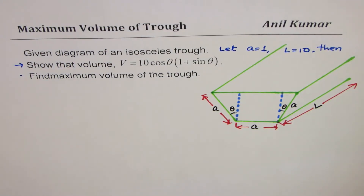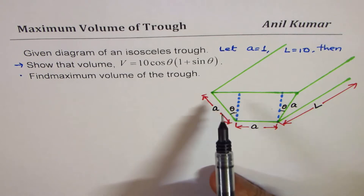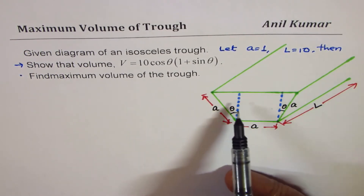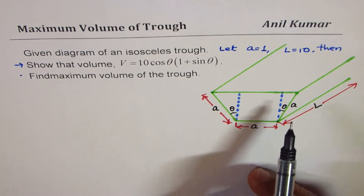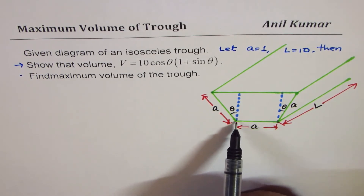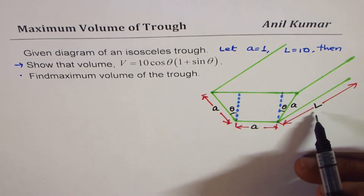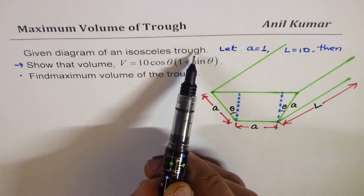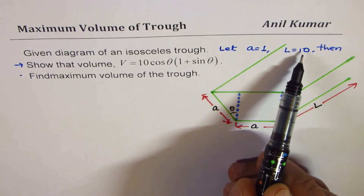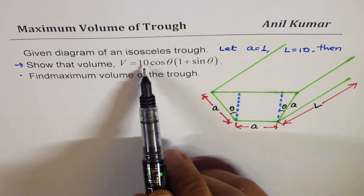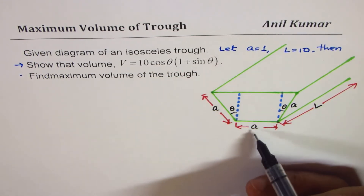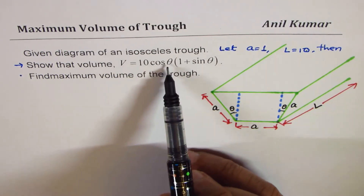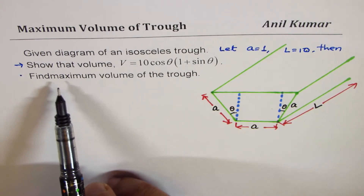I'm Anil Kumar sharing a question from my subscriber — thank you all for your views and excellent questions. I've modified this question to make it more general. We have a diagram of an isosceles trough whose cross section is like a trapezoid. The dimensions are: a is the smaller side, L is the length, and theta is the angle at the base with the vertical. Given a equals 1 and L equals 10, show that the volume is 10 cos theta times (1 plus sin theta), and then find the maximum volume of the trough.